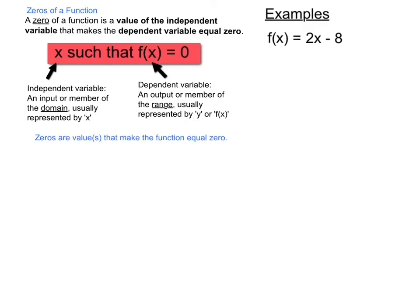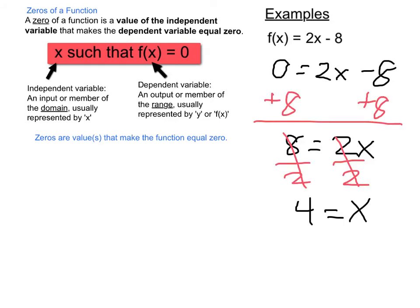Let's look at some examples. The function with the rule f(x) equals 2x minus 8 has a zero at x equals 4, because if I set f(x) equal to zero and solve for x, I can quickly see that x must equal 4 in order for this to be true. If I plug in 4 for x, 2 times 4 is 8 minus 8 is zero.